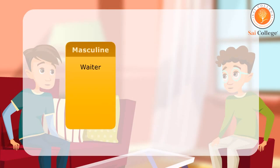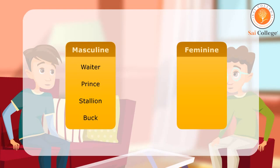Here is a list of some masculine and feminine nouns. Masculine: waiter, prince, stallion, buck. Feminine: waitress, princess, mare, doe.